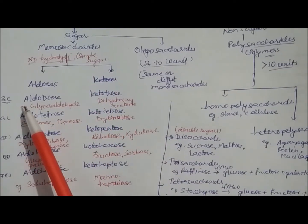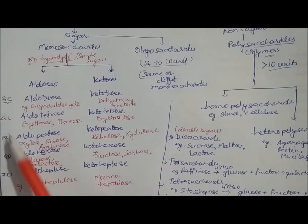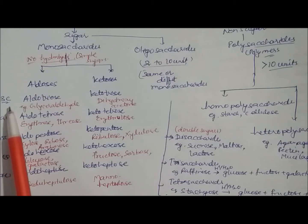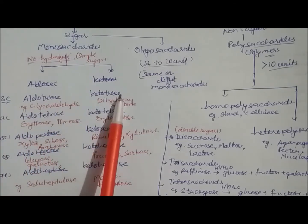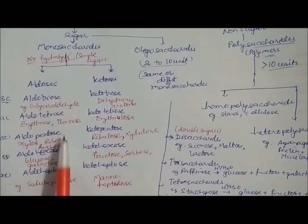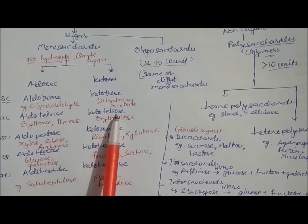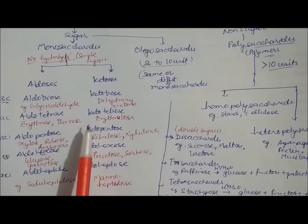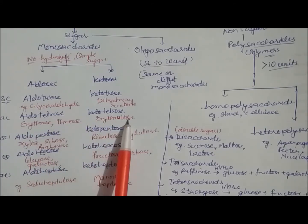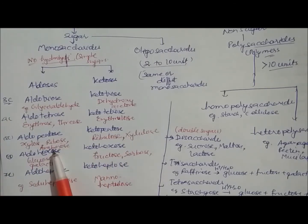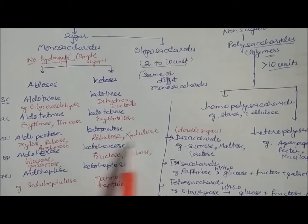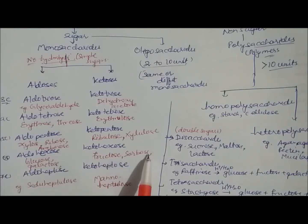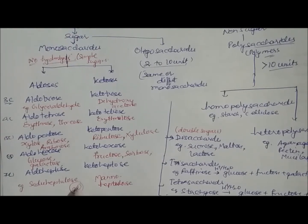Monosaccharides are classified by carbon number from three to seven, divided into aldose and ketose types. Aldotriose example: glyceraldehyde; ketotriose: dihydroxyacetone. Aldotetrose: erythrose and threose; ketotetrose: erythrulose. Aldopentose: xylose, ribose, arabinose; ketopentose: ribulose and xylulose. Aldohexose: glucose and galactose; ketohexose: fructose and sorbose. Aldoheptose: sedoheptulose; ketoheptose: mannoheptulose. There are approximately 20 types of monosaccharides.